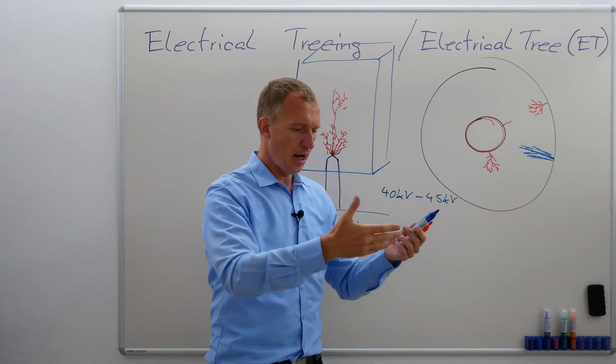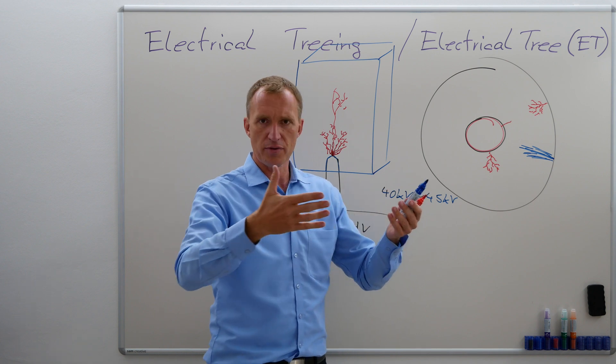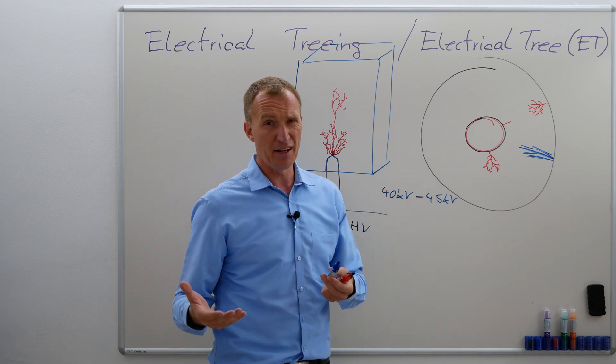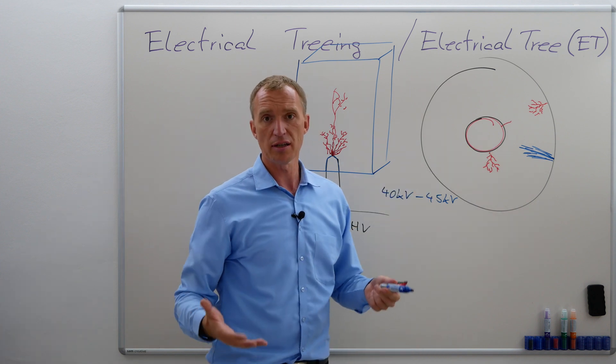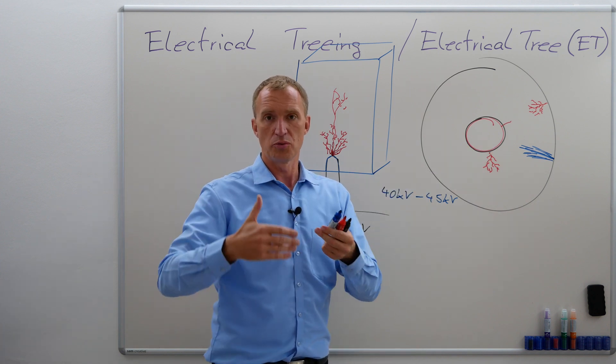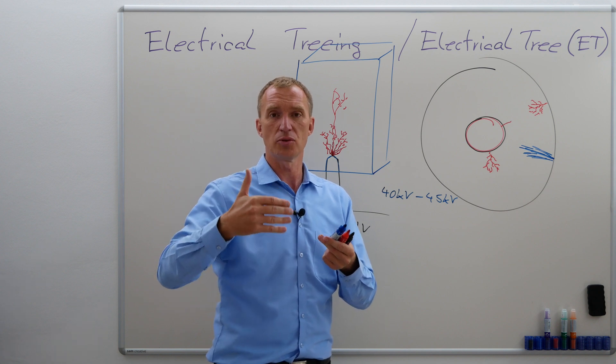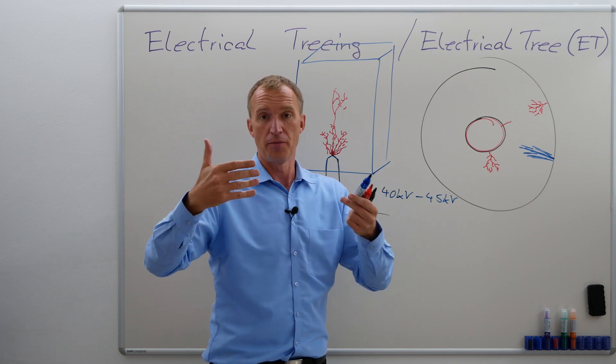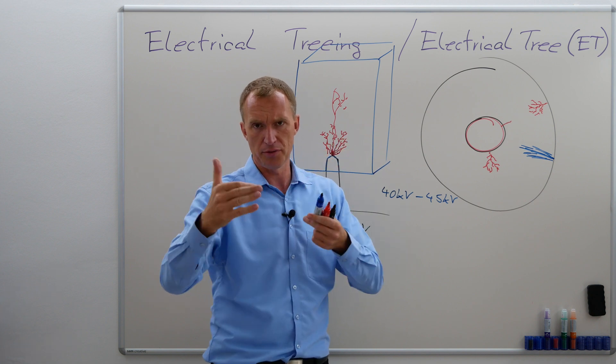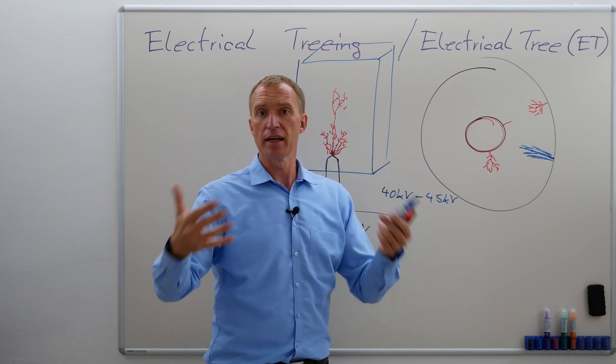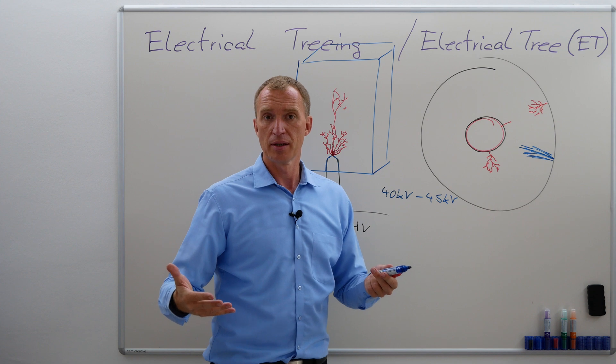And if the electrical field changes, obviously, we're going to have areas where we have less electrical field and we have areas where we have more electrical field. And since they are changing, we are going to reach a point where the electrical field is above critical. We have a video talking about electrical field critical, and then we can have electrical treeing.